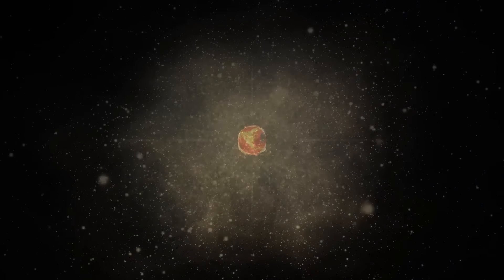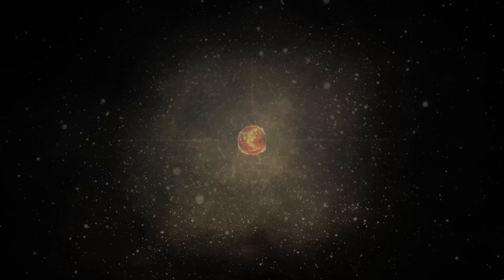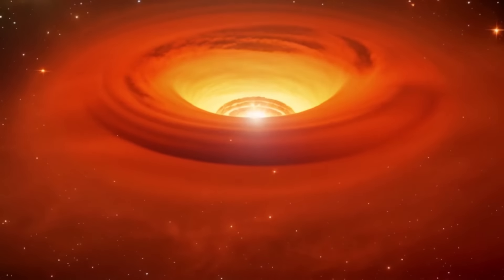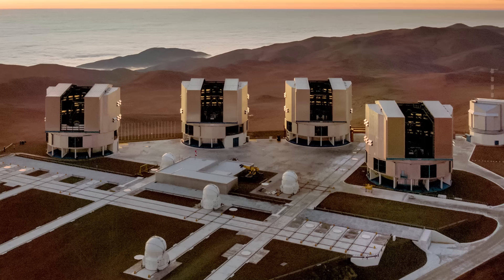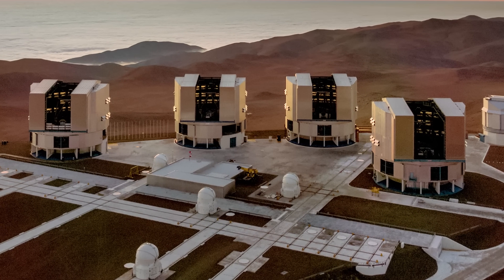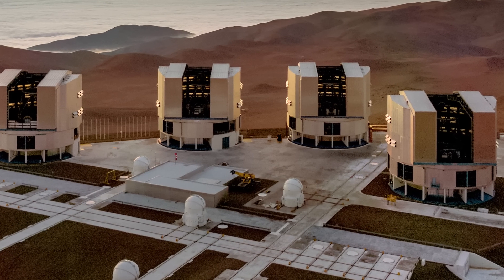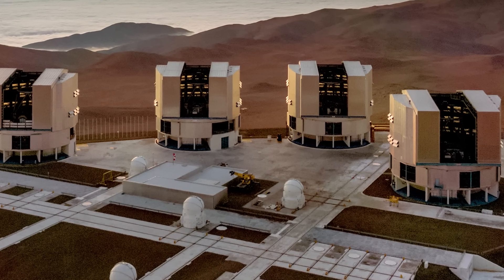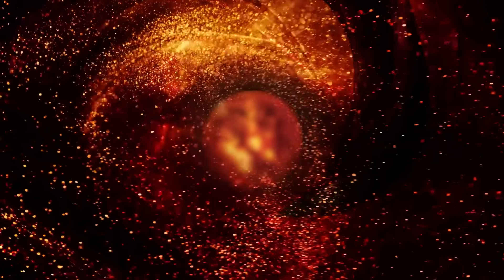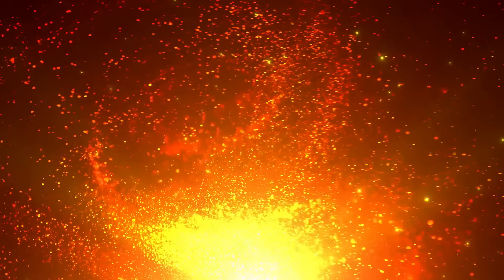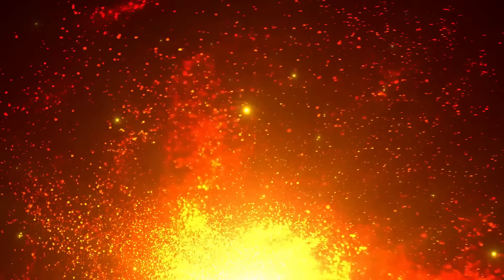But perhaps one of the most amazing features of WOH G64 is the dust envelope surrounding it. In 2007, astronomers, with the help of the Very Large Telescope, discovered that WOH G64 was surrounded by a torus-shaped cloud. It's so thick that to some extent it obscures the star. The dust envelope is made up of the material the star has expelled, and it contains between three to nine times the mass of the Sun.